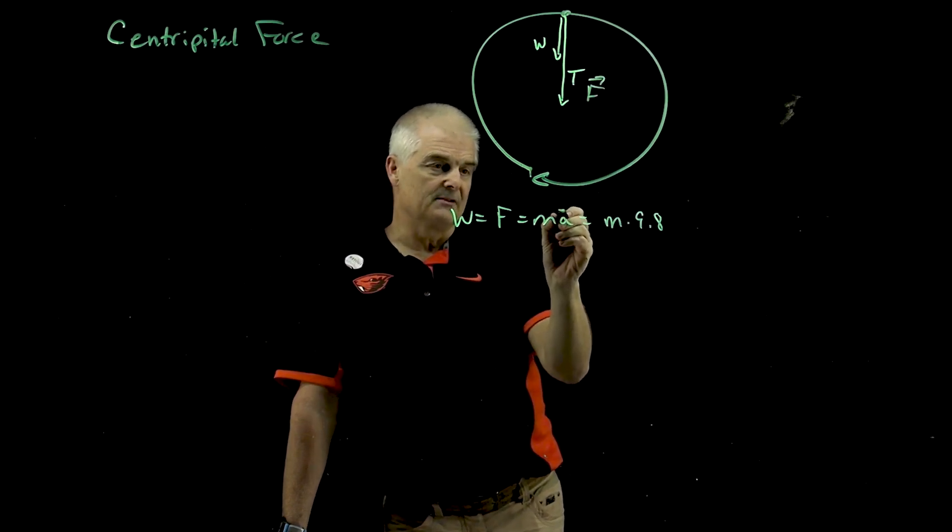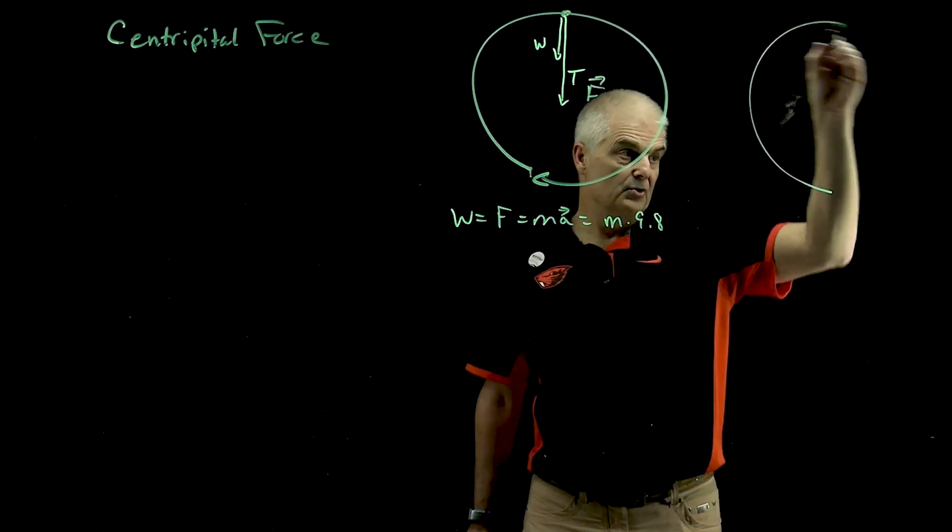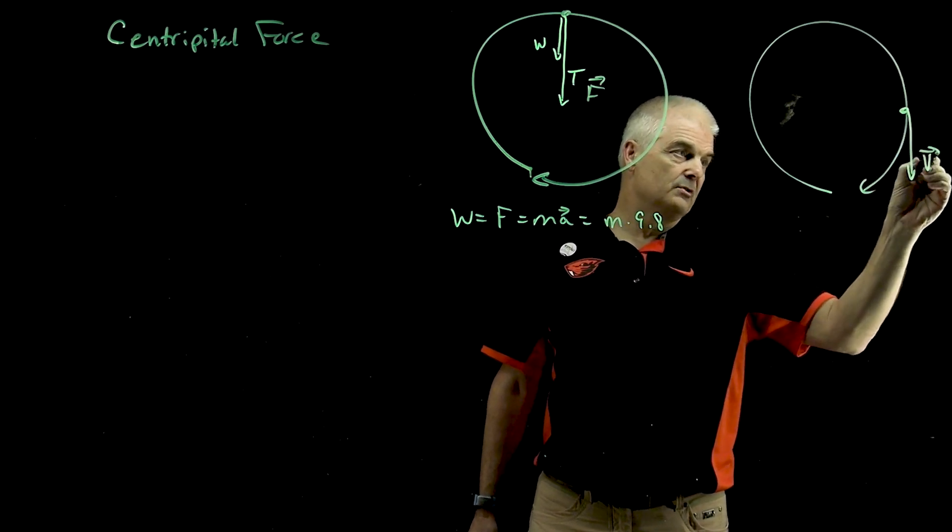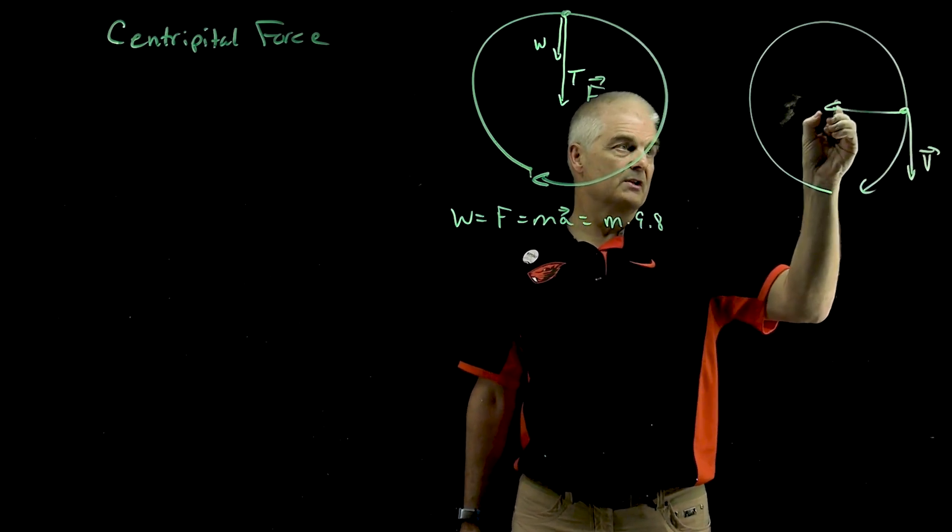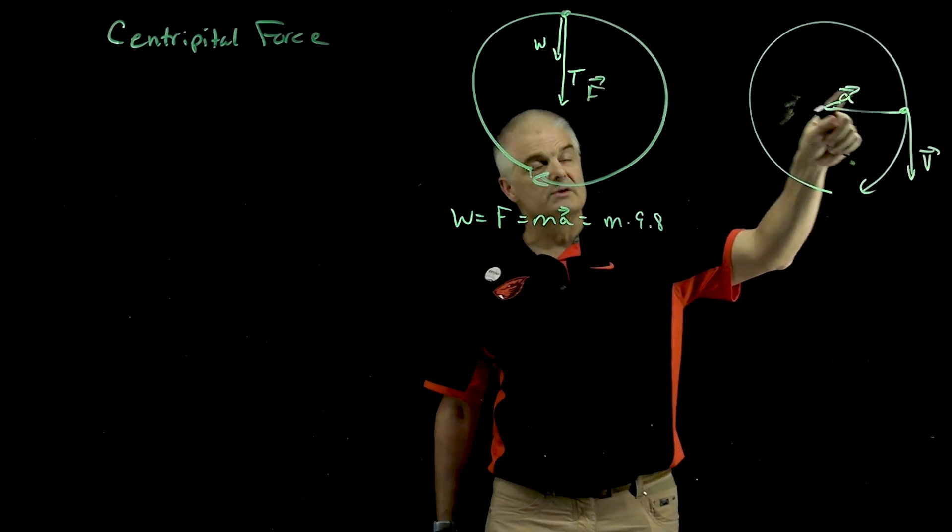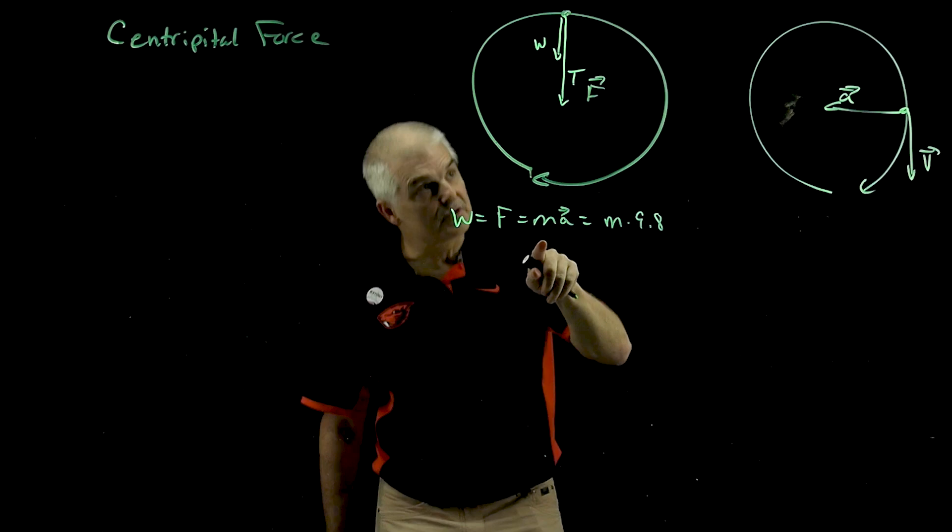So when something is moving in a circular motion, the force is towards the center. Just like we said in the last video, if I have circular motion, if I stop right here, the velocity is tangential, but the acceleration is always towards the center. So if the acceleration is towards the middle, then therefore the force is towards the middle.